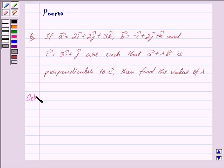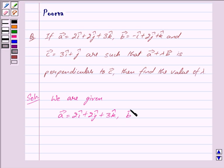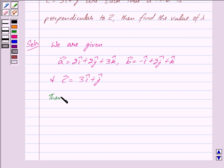We are given that vector a is equal to 2i cap plus 2j cap plus 3k cap, vector b is equal to minus i cap plus 2j cap plus k cap, and vector c is equal to 3i cap plus j cap. Then we have vector a plus lambda vector b is equal to...